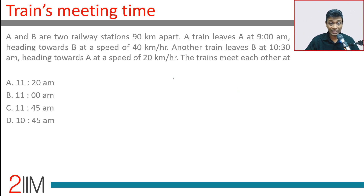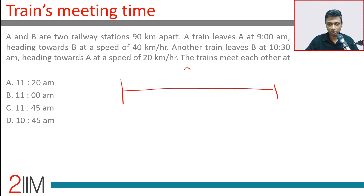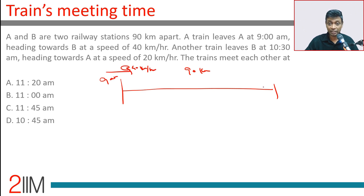A and B are two regular stations 90 kilometers apart. A train leaves A at 9 a.m. heading towards B at a speed of 40 kilometers per hour. Another train leaves B at 10:30 a.m.